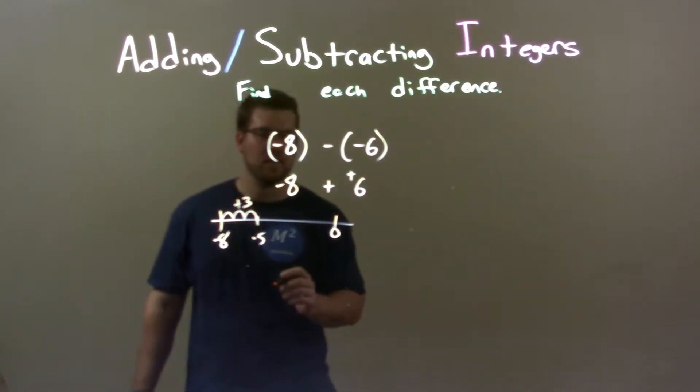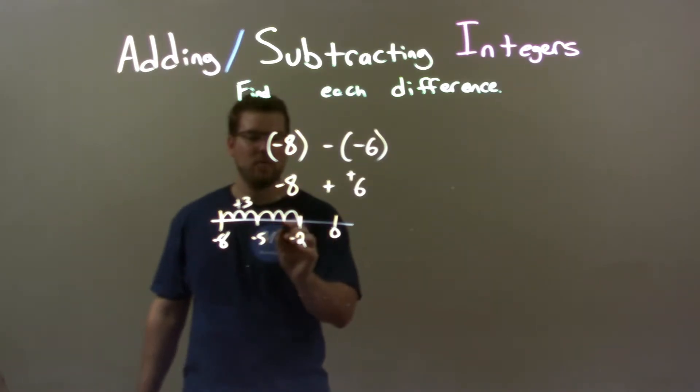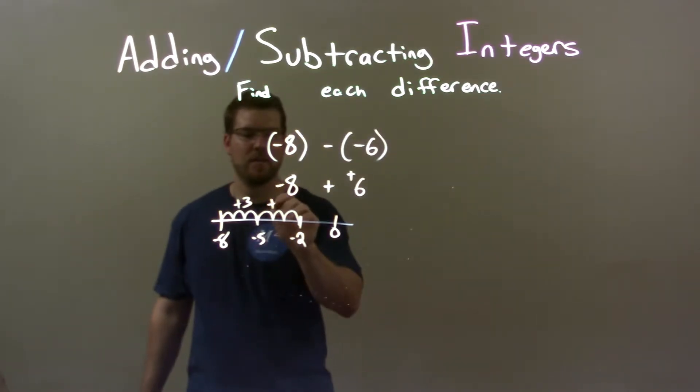We've gone up plus 3 units. Well, 3 plus 3 is 6, so I have to go 3 more units. 1, 2, 3. Negative 5 plus 3 is negative 2. Negative 4, negative 3, negative 2. So we add 3.